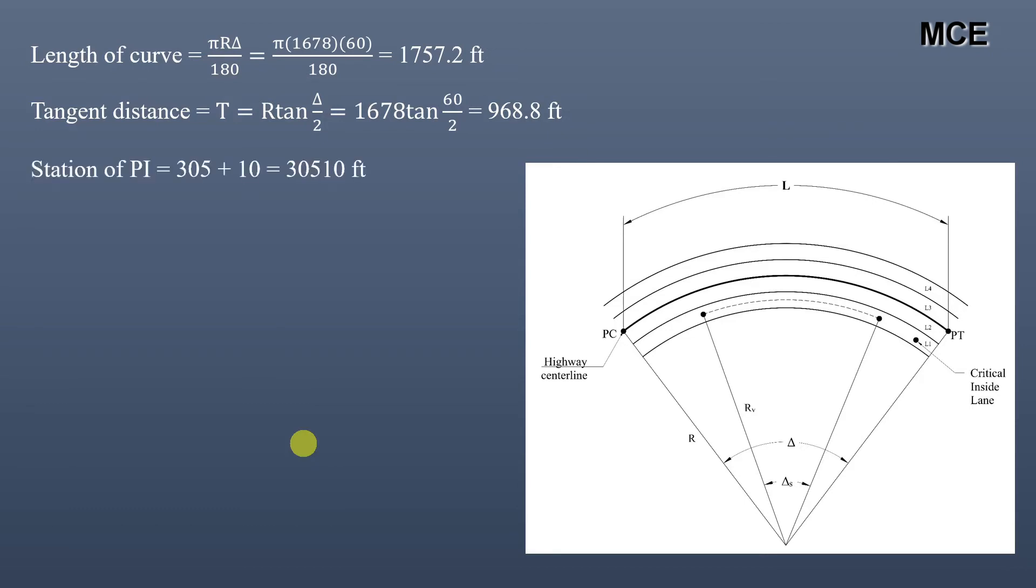Station of PI is given as 305+10. Since one station is 100 feet, this gives the station of PI = 30,510 feet. Station of PC is given as station of PI minus tangent distance.